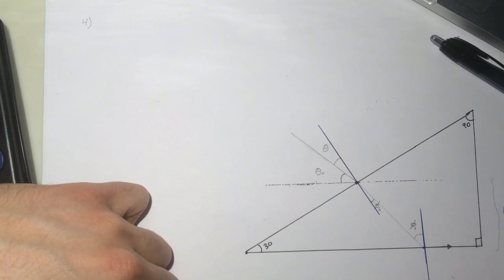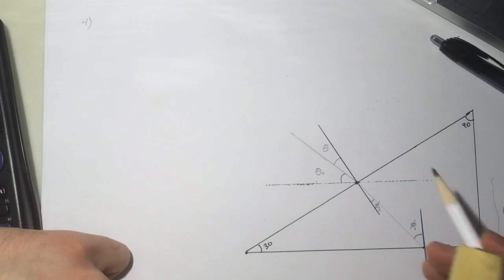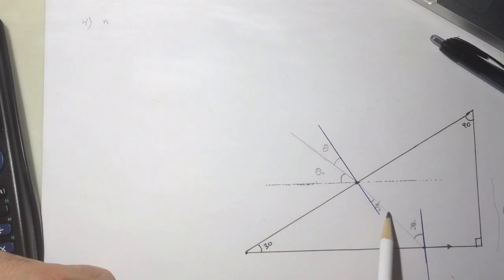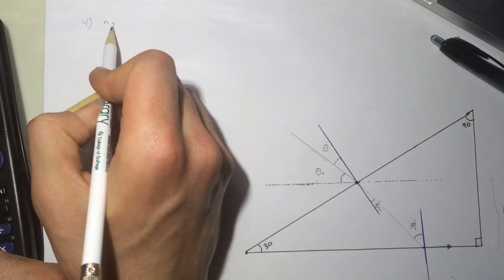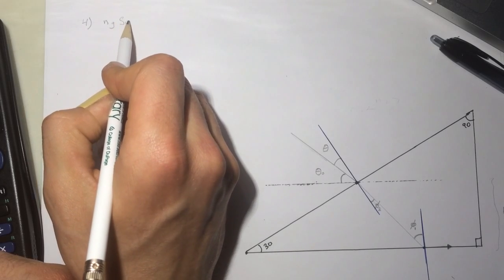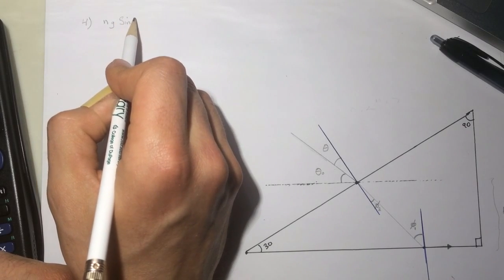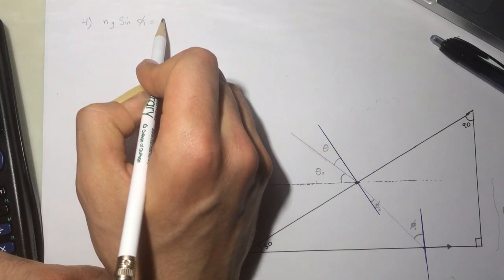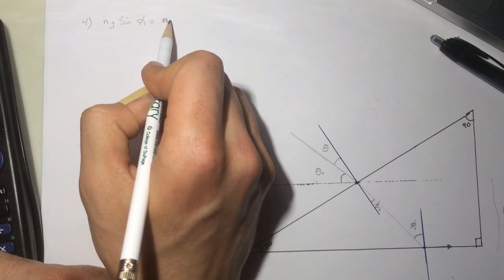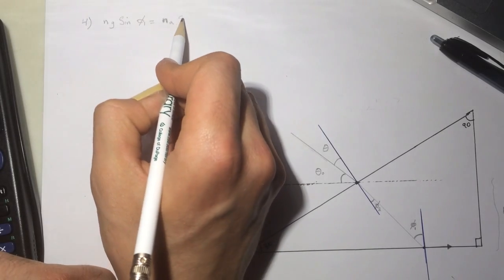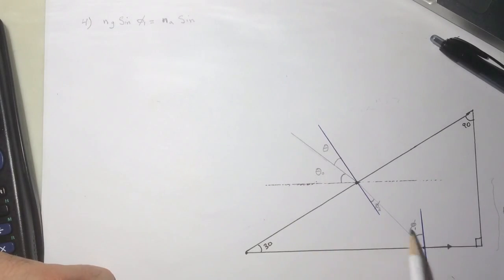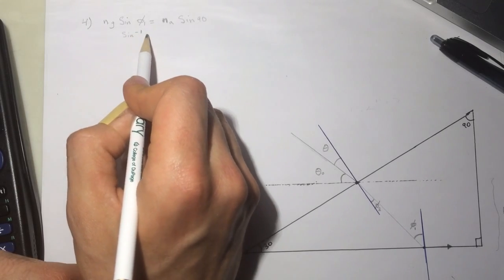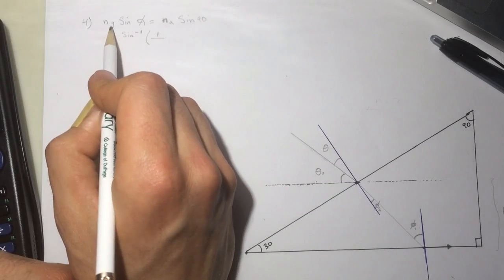The first thing is we need to find this guy. How we find this guy is simply by doing n prism sine of the theta 1 equal to the n air, and then sine, you can see it's a 90 degrees here.